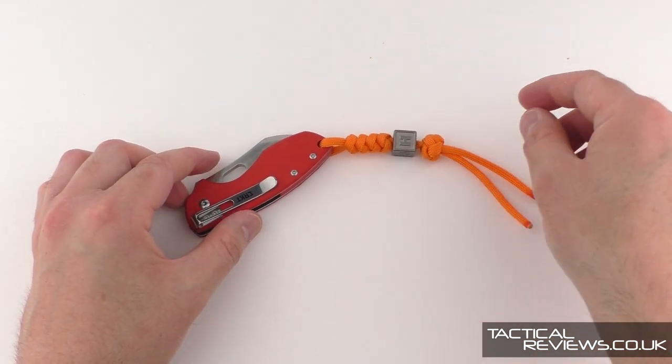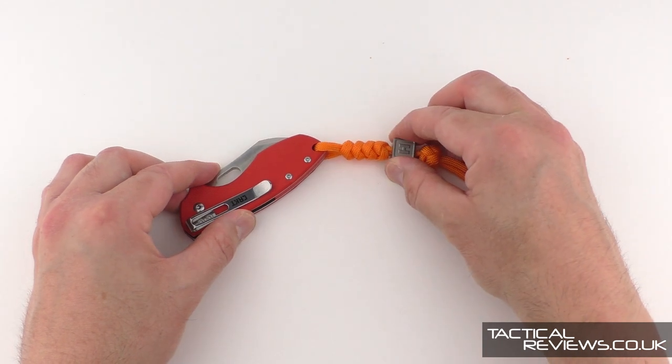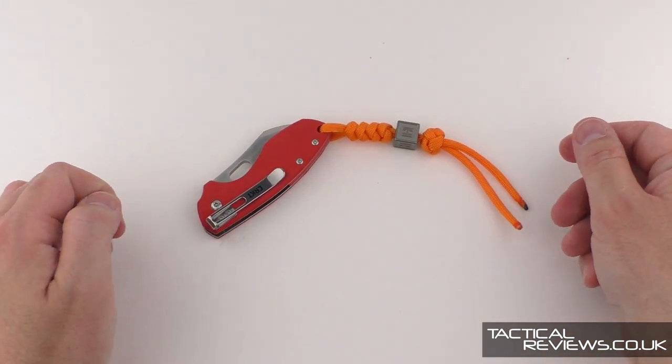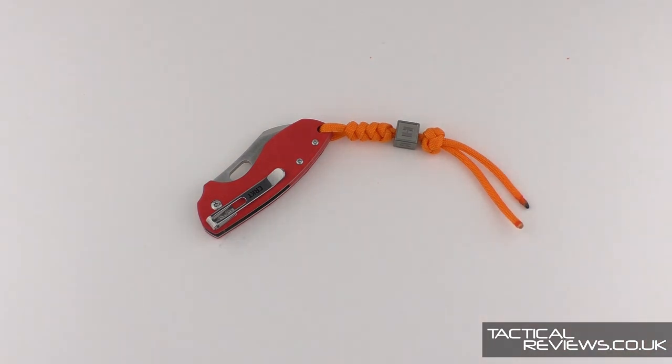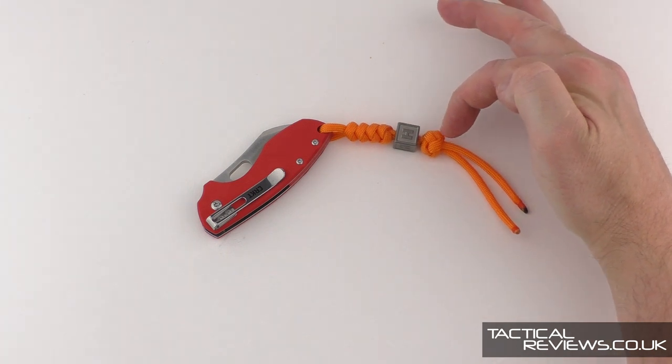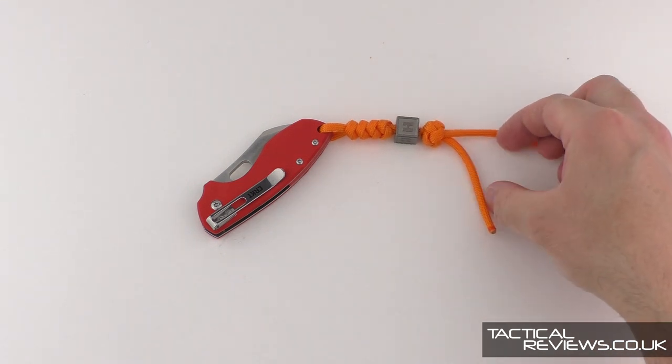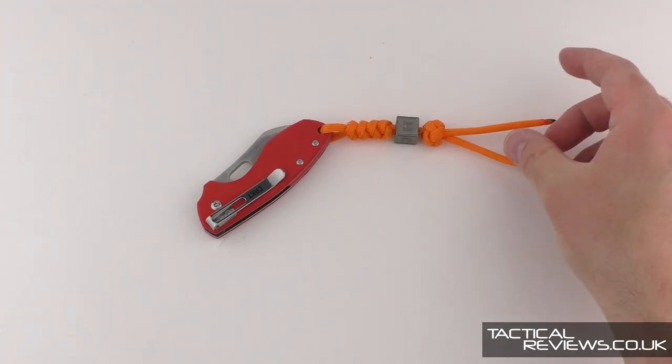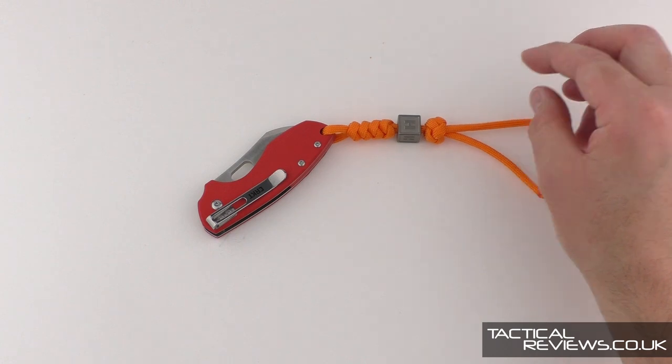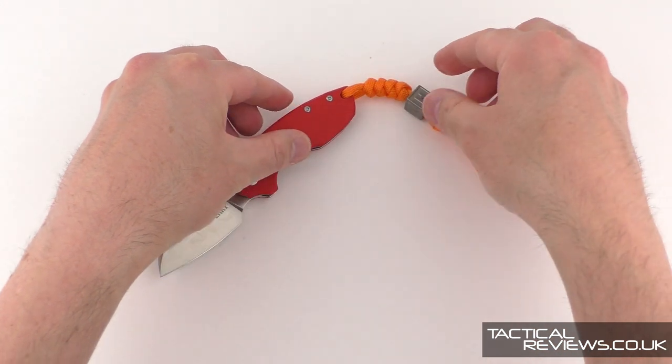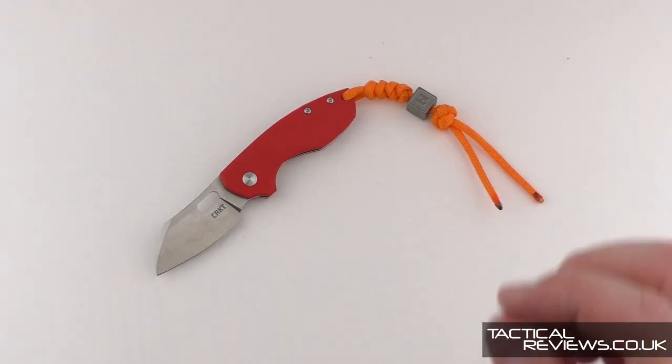So tidy up these loose ends shortly but there we go. Basically 60 centimeters of paracord into four snake knots, a bead and a lanyard knot. And the absolute minimum left over, only just possible to tie that knot in that way. Heinnie exclusive CRKT with Heinnie bead tied to a lanyard.